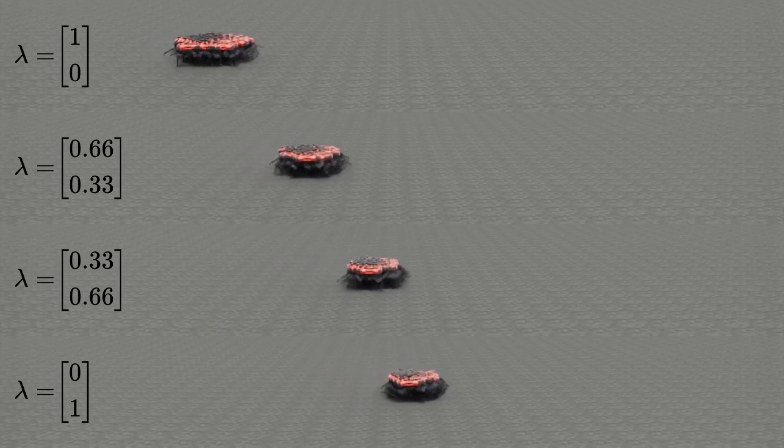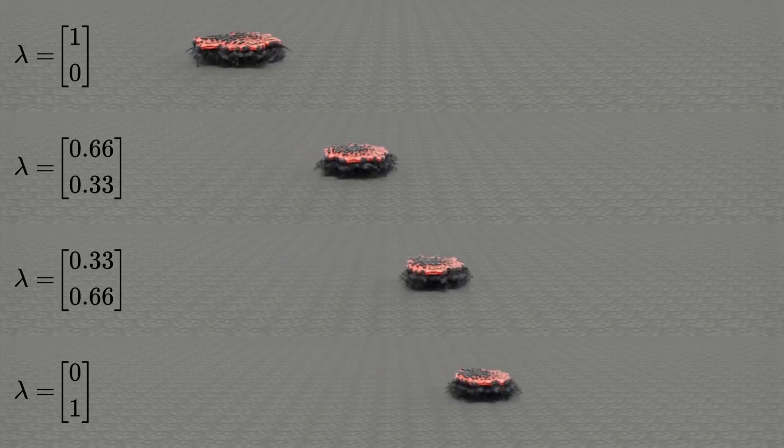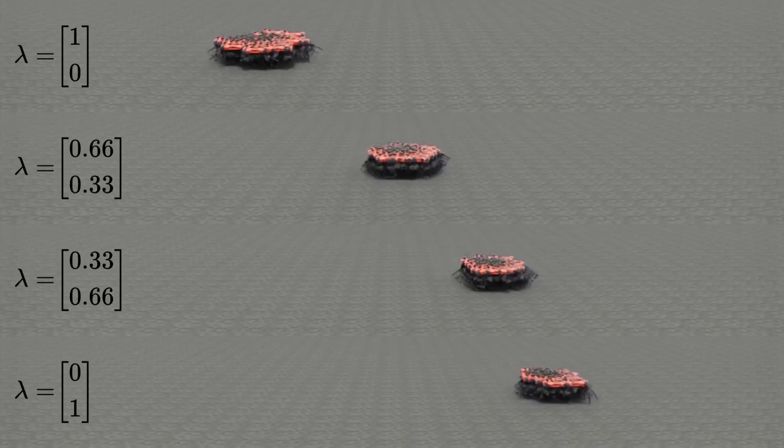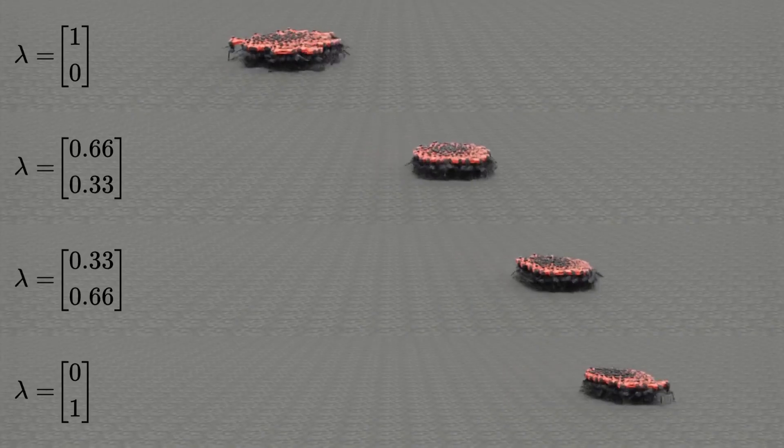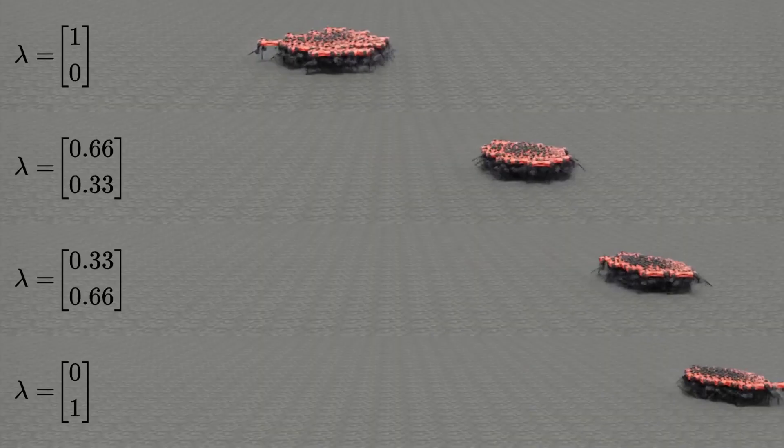This weighting mechanism also allows for fine-grained control of the skills. While we command a continuous walk-forward skill, we can alter the robot's speed by only changing the factor weights. This adjusts the balance between the intrinsic reward for moving and the extrinsic reward for standing still.